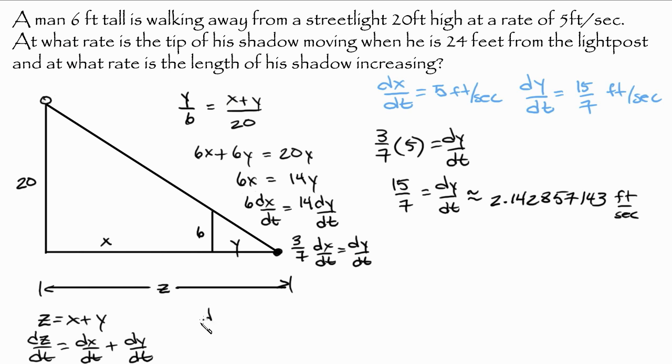Since I know these two, dz/dt is equal to, well, basically 5 plus 15 over 7. And that's equal to 50 over 7 feet per second. And that's approximately equal to 7.142857143 feet per second.